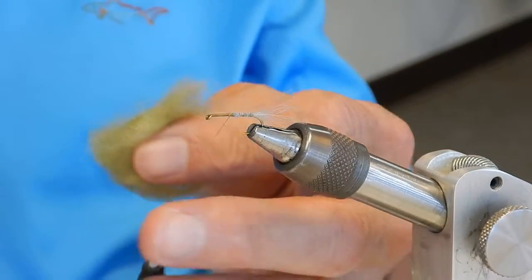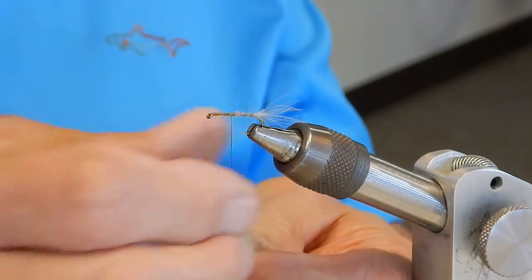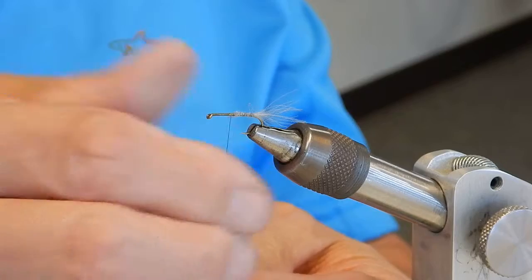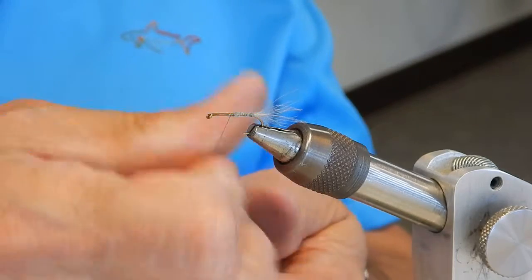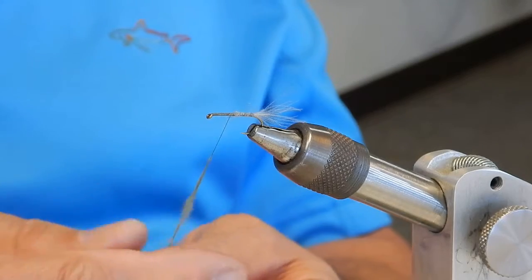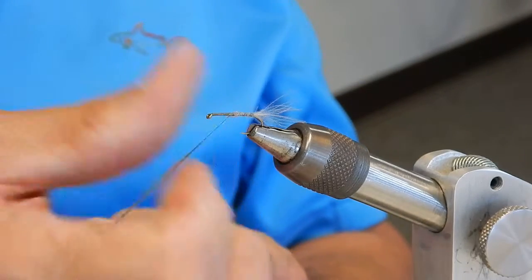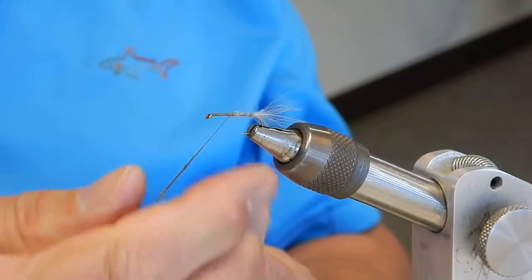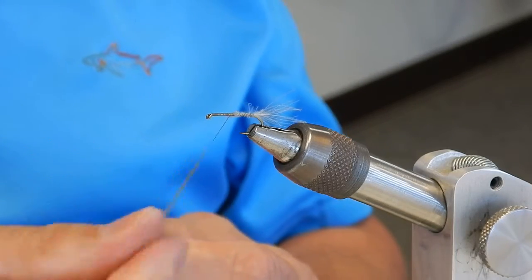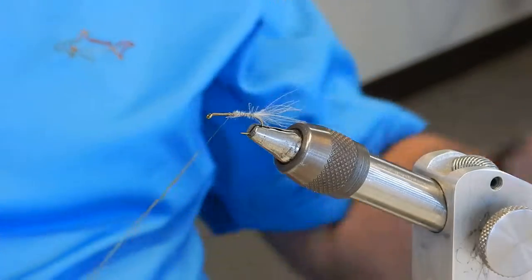So put some dubbing on this baby. Would be easy if they had blue-winged olives this big, wouldn't it? That might be enough. Maybe.